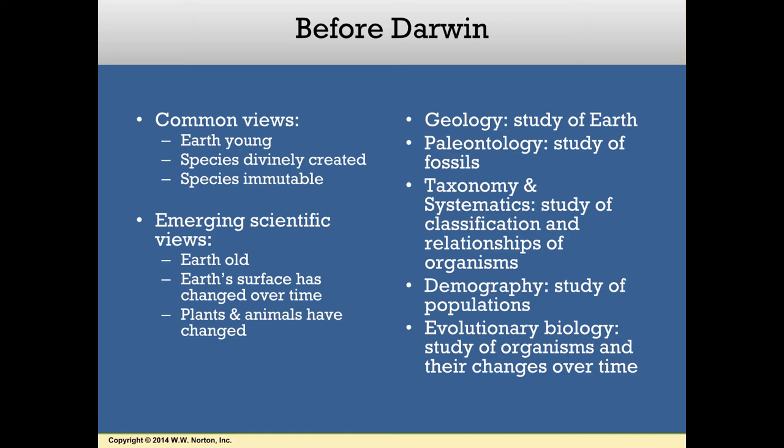Evidence for these revolutionary ideas came from many different scientific arenas. We will look at how Darwin was influenced by new discoveries in the following sciences: geology, the study of Earth and its processes; paleontology, the study of fossils; taxonomy and systematics, the study of organisms, their classification and relationships; demography, the study of populations; and evolutionary biology, the study of how organisms change over time.